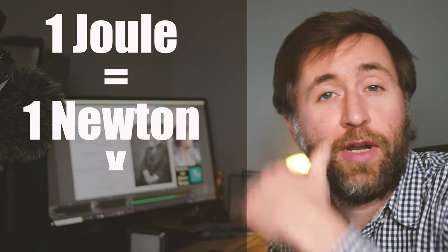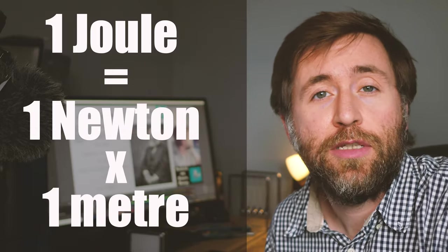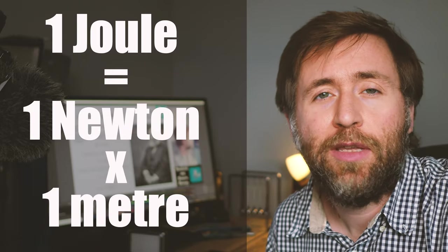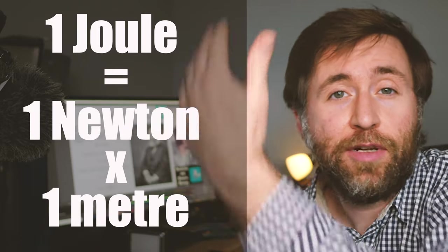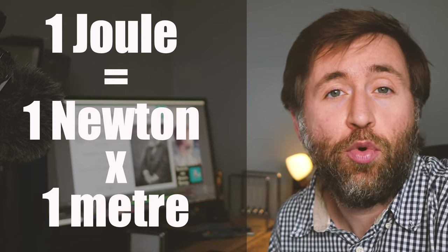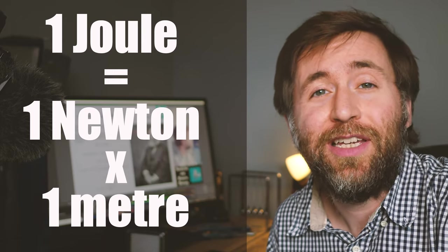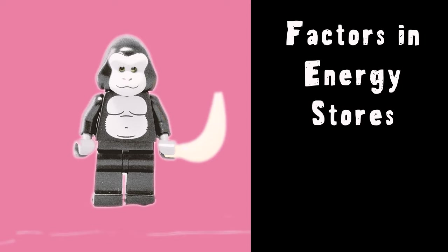With that idea we can define what one joule is. One joule is one newton through one meter — or equivalently, 100 grams raised in Earth's gravitational field by one meter is one joule of gravitational potential energy.